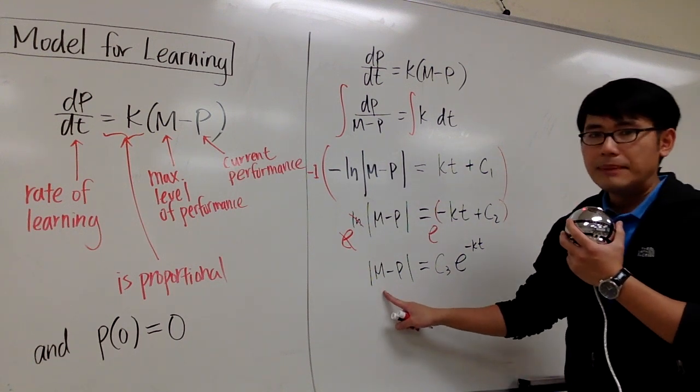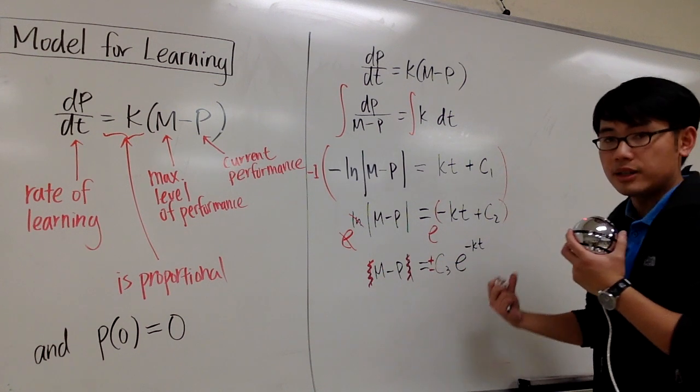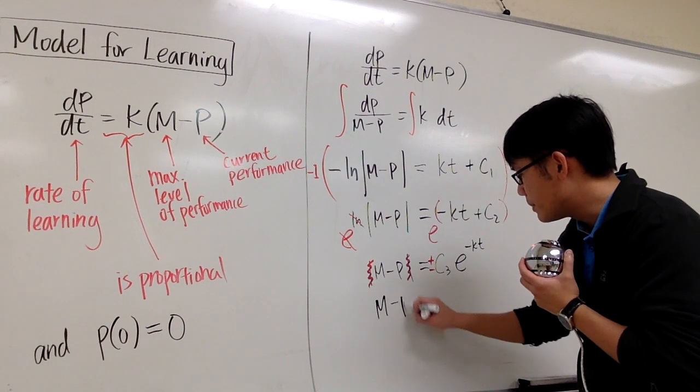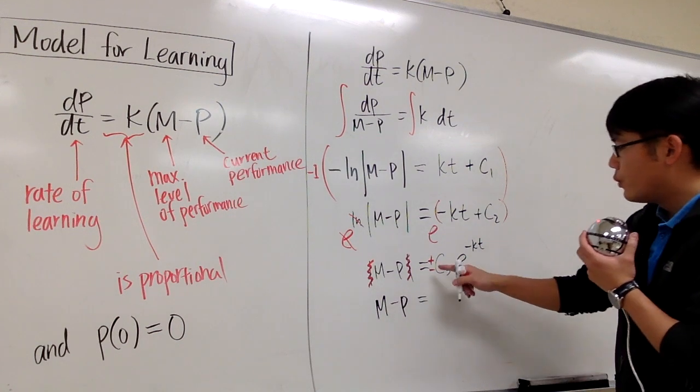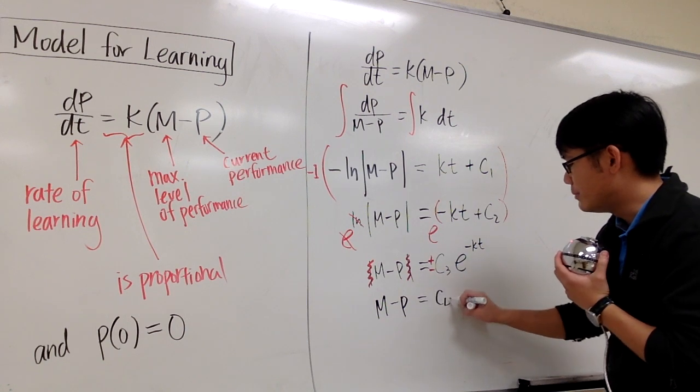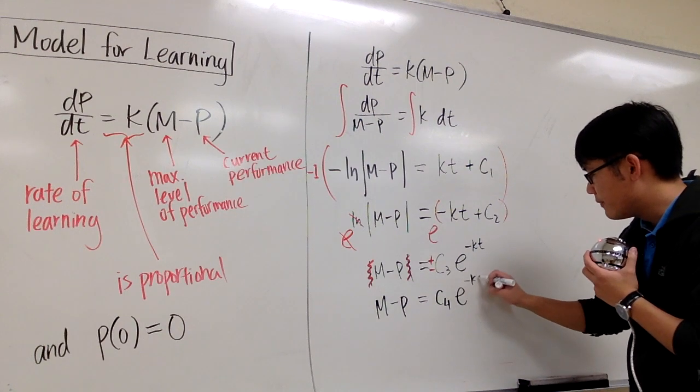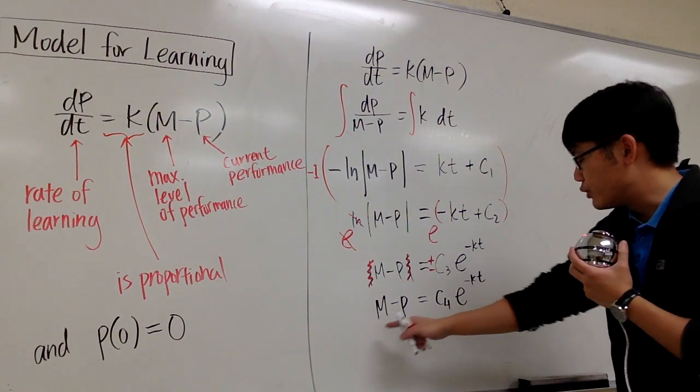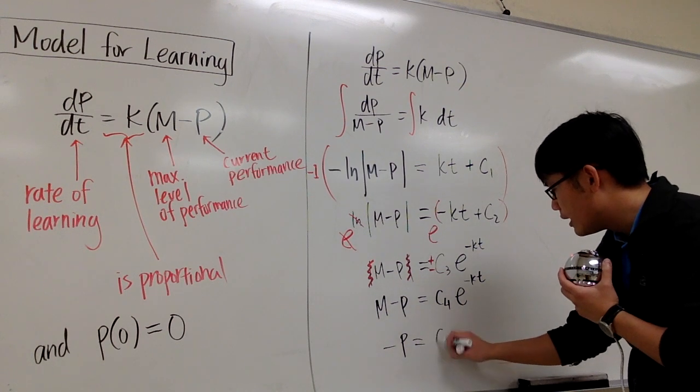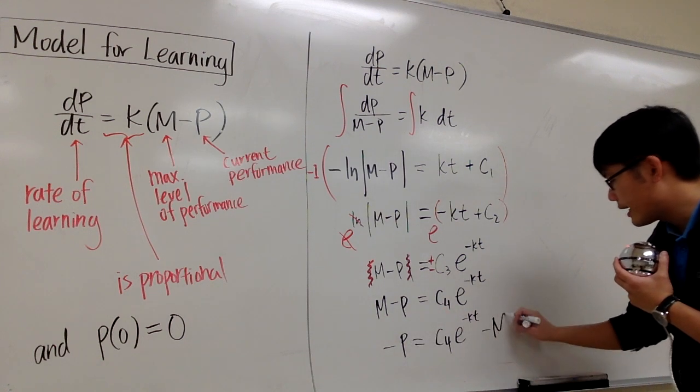I need to get rid of the absolute value, so I can just say, let me get rid of this absolute value, and then I'll put a plus-minus on the right-hand side. And then, we will have m minus p equals to, well, I don't know if it's plus or minus c3, I'm just going to call that another constant, so keep track, this will be my c4. And we have e to the negative kt. And I just need to subtract m on both sides, I get negative p equals to c4 e to the negative kt minus m.